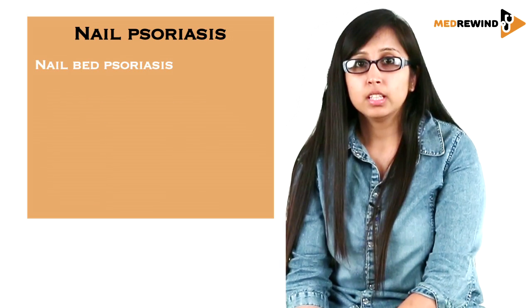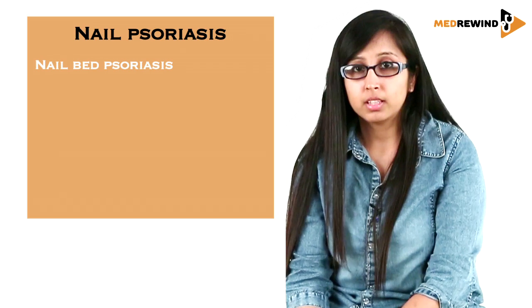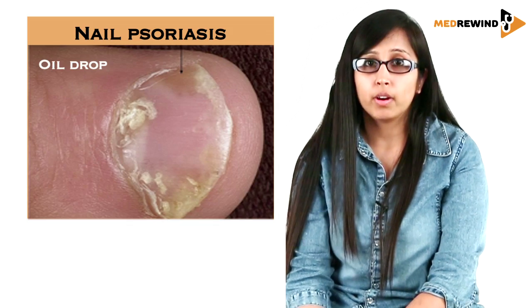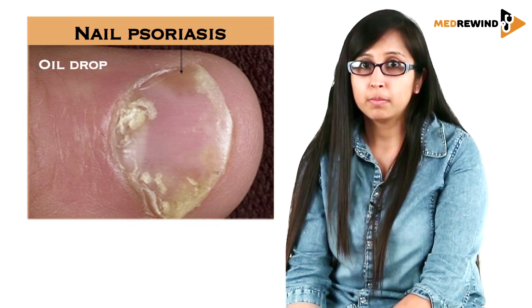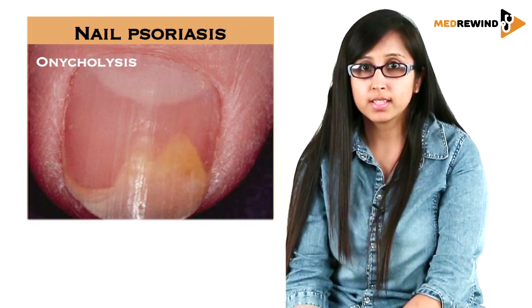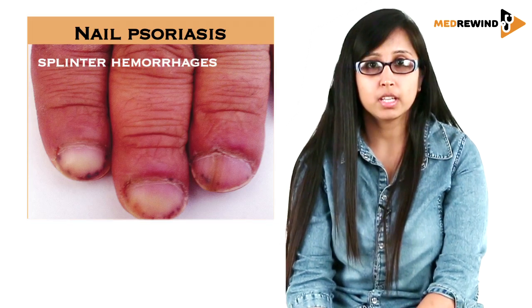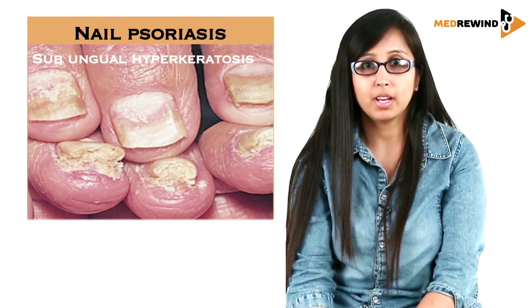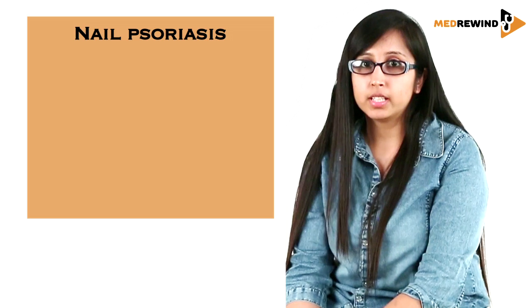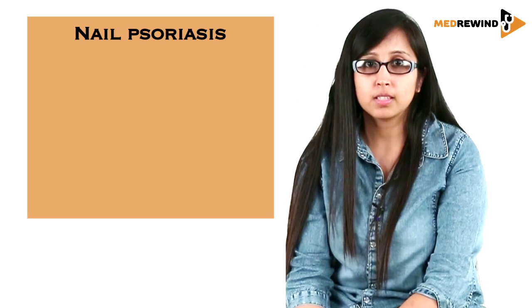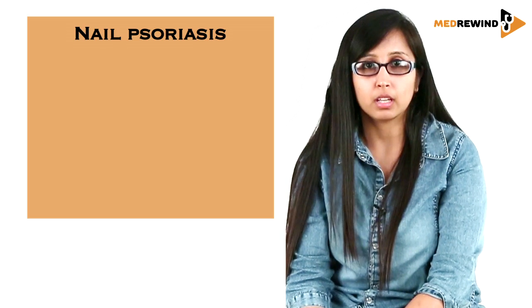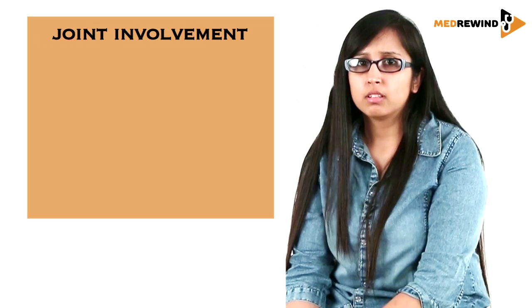Pitting in psoriatic nails signifies the loss of parakeratotic foci. If the pathology lies in the nail bed, four signs can be seen: the oil drop or salmon patch dyschromia, onycholysis, splinter hemorrhages, and subungual hyperkeratosis.